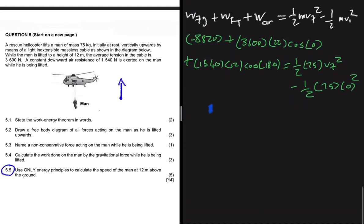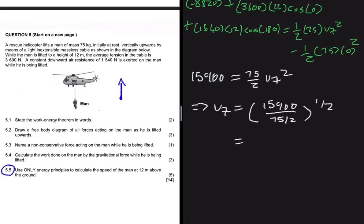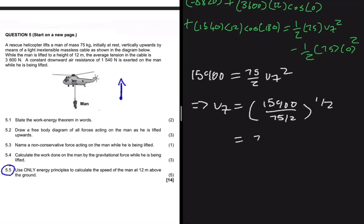So we have 15,900 = (75/2) × Vf². Since ½ × 75 × 0² is zero, we can ignore that term. Solving for Vf: Vf = √(15,900 ÷ (75/2)), which gives us Vf = 20.59 meters per second.